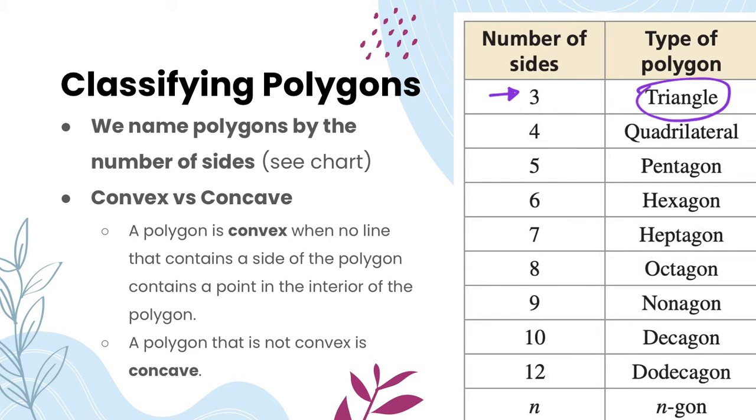Four sides is a quadrilateral, and so on. Some of these you might not know—a 12-sided polygon is a dodecagon, nine sides is a nonagon. If it's more than what's on this chart, we just call it an n-gon. So a 25-sided shape is called a 25-gon. You can access this chart whenever you need to answer these kinds of questions.